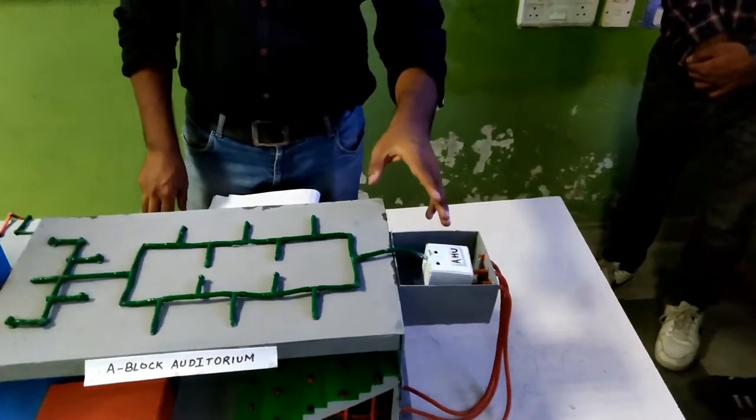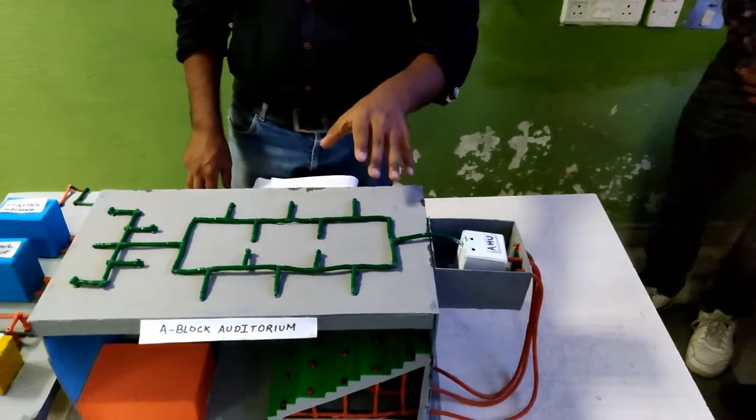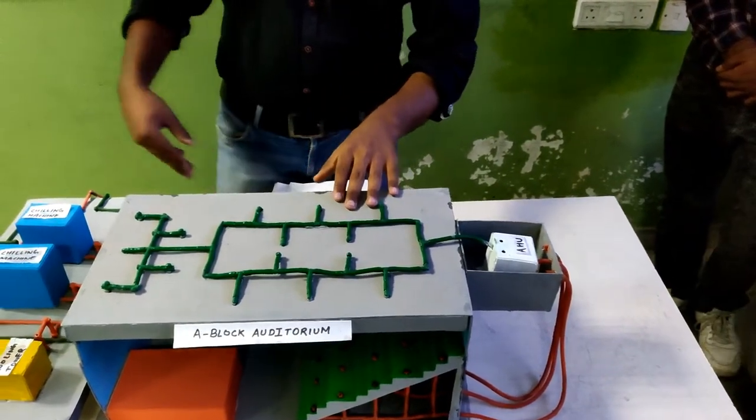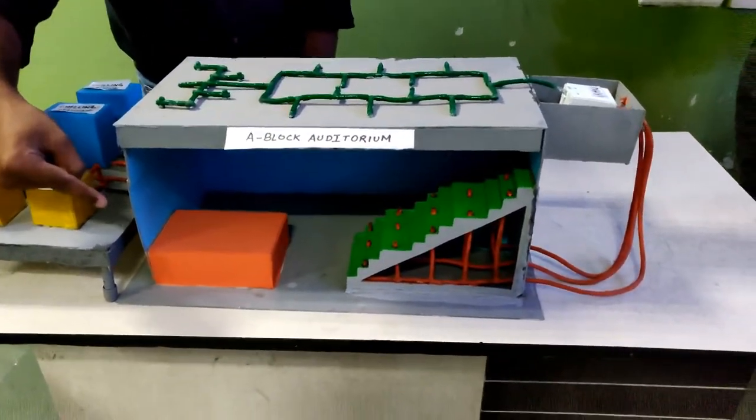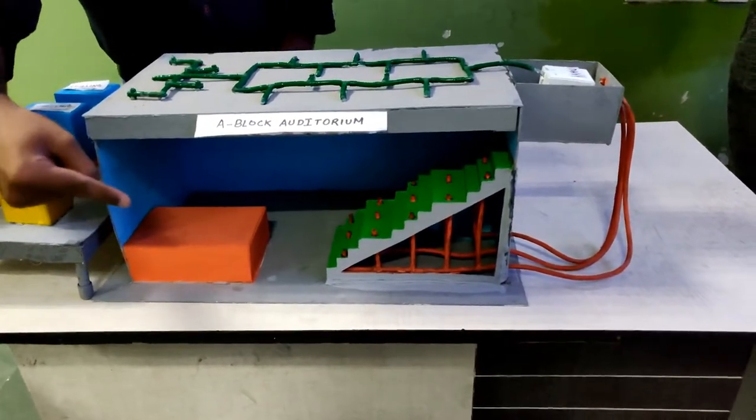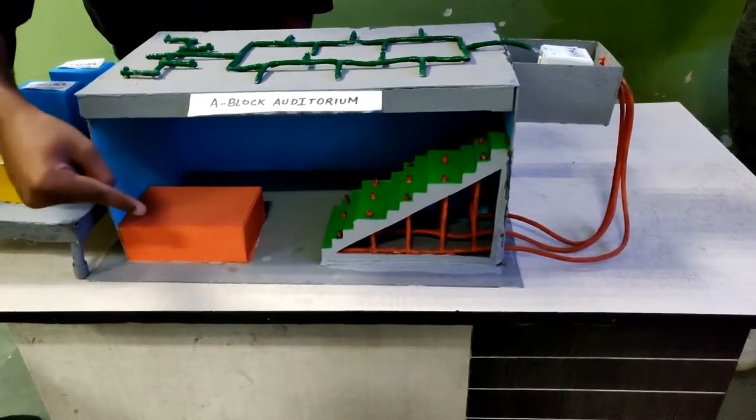After reaching the AHU system, the air is supplied in the auditorium via the supply air duct system. After cooling the auditorium, the hot air returns back to the AHU system via the return air duct system, which is being set up below the stairs.